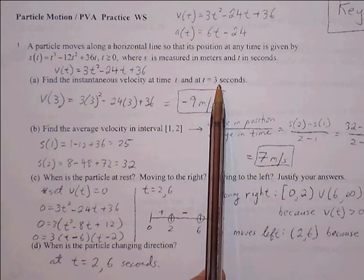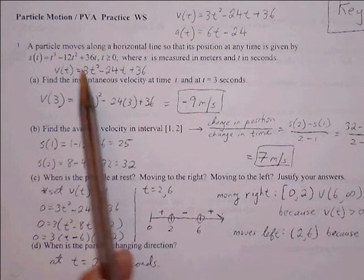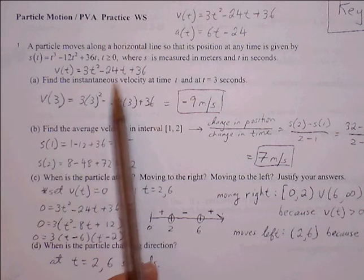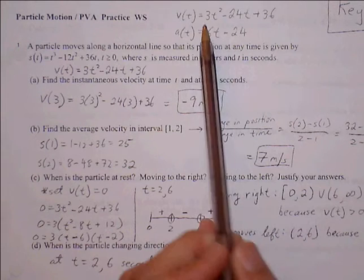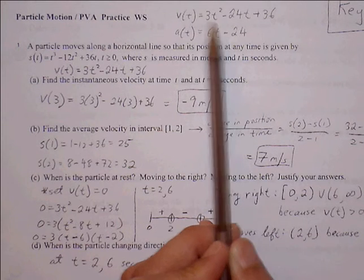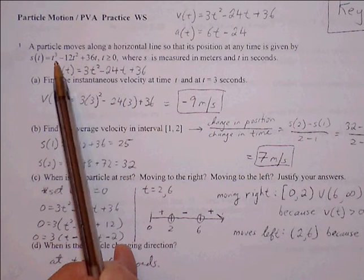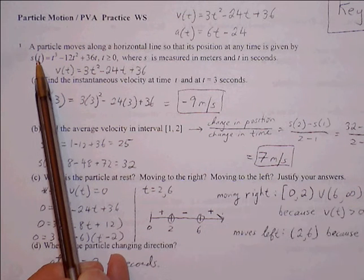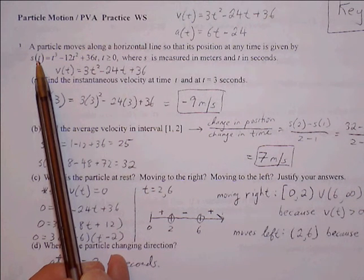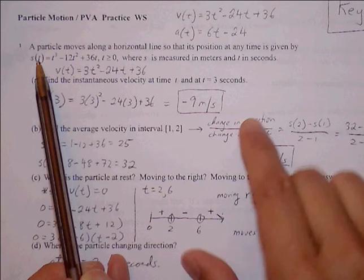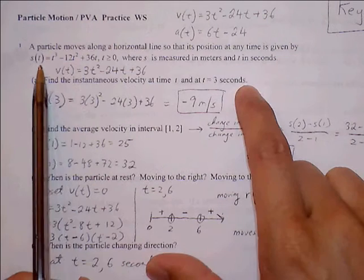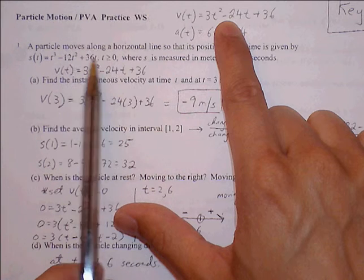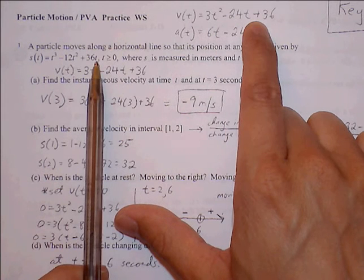We're going to find the velocity and the acceleration function to begin with, since we know we're going to use them later in the problem. Going through the power rule: t cubed becomes 3t squared, 12t squared becomes 24t, and 36t goes to 36.